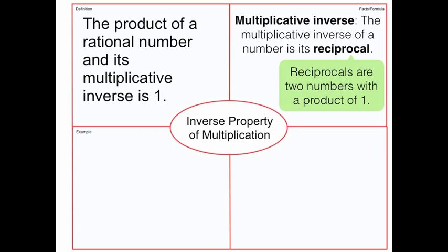Here's an example: three-fourths times its reciprocal, four-thirds, and that's going to equal one.